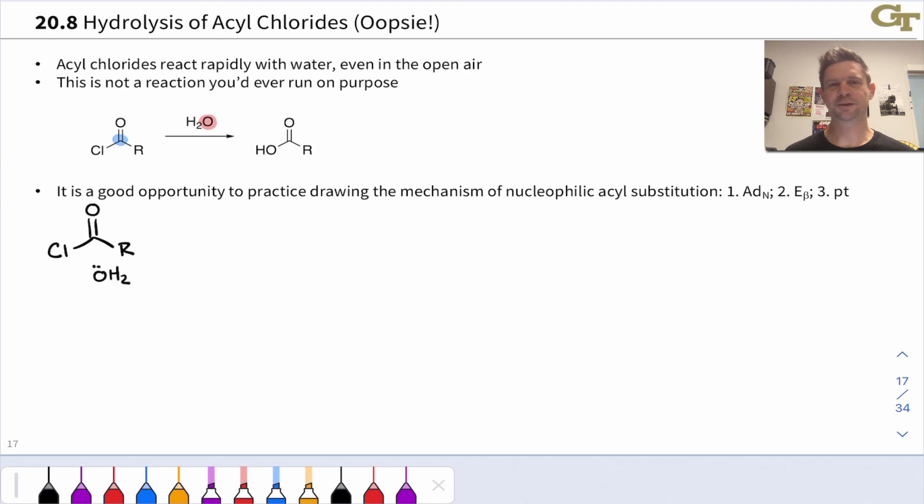To begin to discuss the reactivity of acyl chlorides we'd be remiss if we didn't start with hydrolysis which is an extremely favorable process for acyl chlorides. So favorable that even in the open air even with water vapor in the air acyl chlorides can hydrolyze and form carboxylic acids.